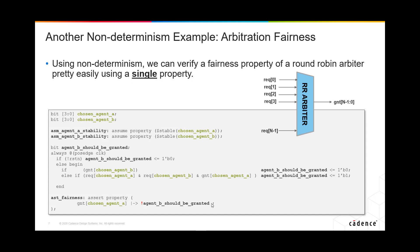If that flag were set it would mean we've had two grants for agent a when b should have had a go. We know this works for any pair of agents out of all the agents there could be, for however many indexes there are in this rec vector. We didn't need to know which pair to choose like we would in simulation. The tool will choose any value it likes and won't miss any, because conceptually it's tested at every possible agent for a and b. Non-determinism takes a while to understand, but it's a very powerful technique which is only really useful in formal verification.